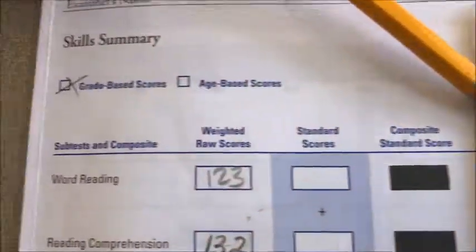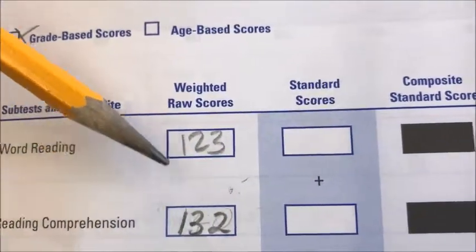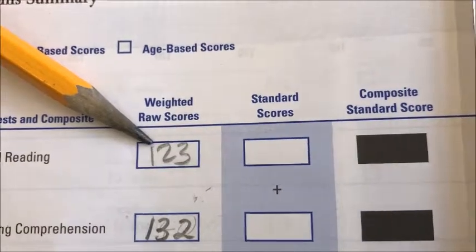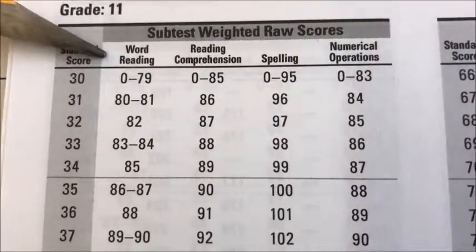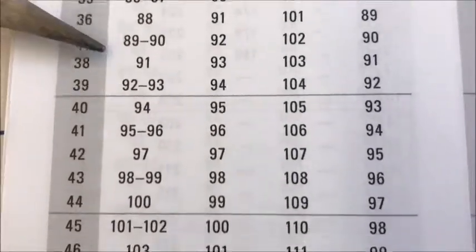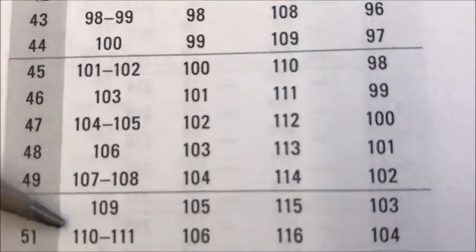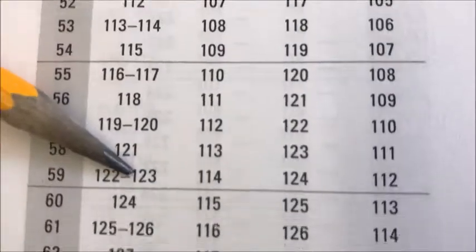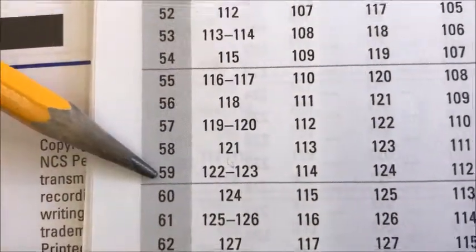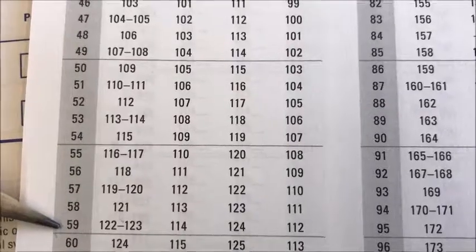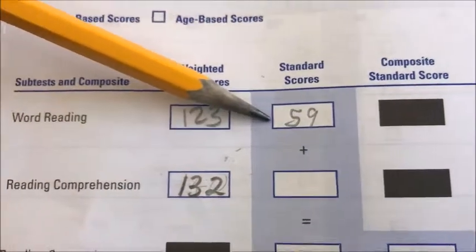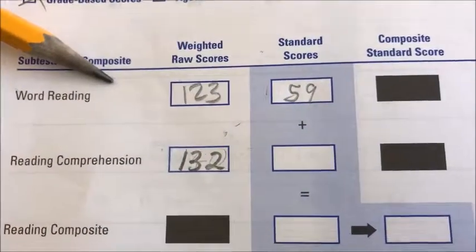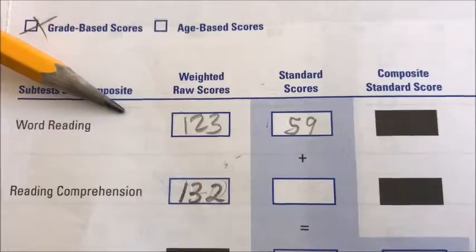Our student's weighted raw score for word reading was 123. So we go down the word reading column until we find 123 — and there it is. The standard score is 59. Once we find that standard score, we write it under standard score next to word reading on the front of the student record form.